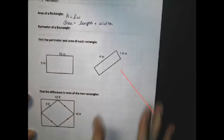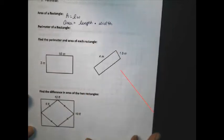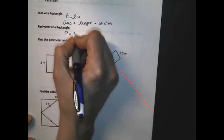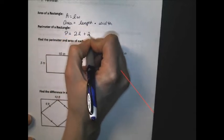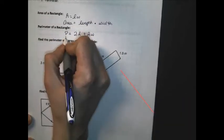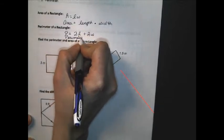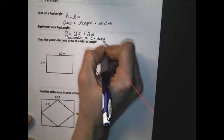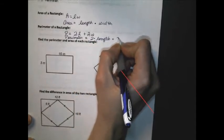The perimeter of an object is the distance around the edges of a figure. And the formula for perimeter is P equals 2L plus 2W. This stands for perimeter equals 2 times the length plus 2 times the width.